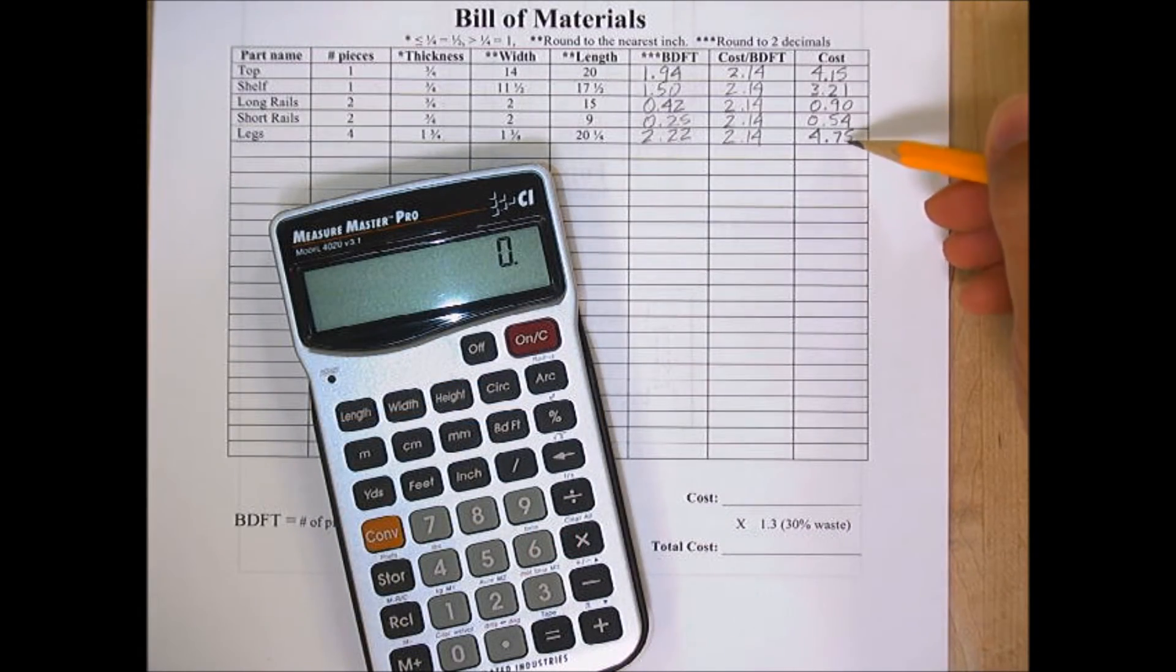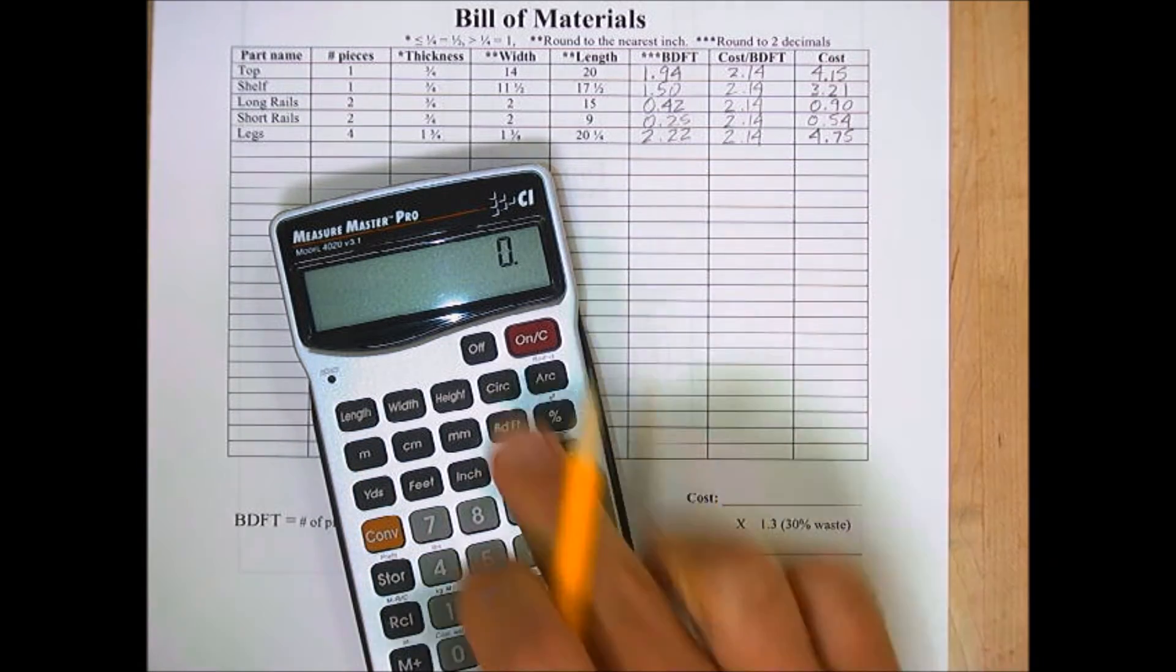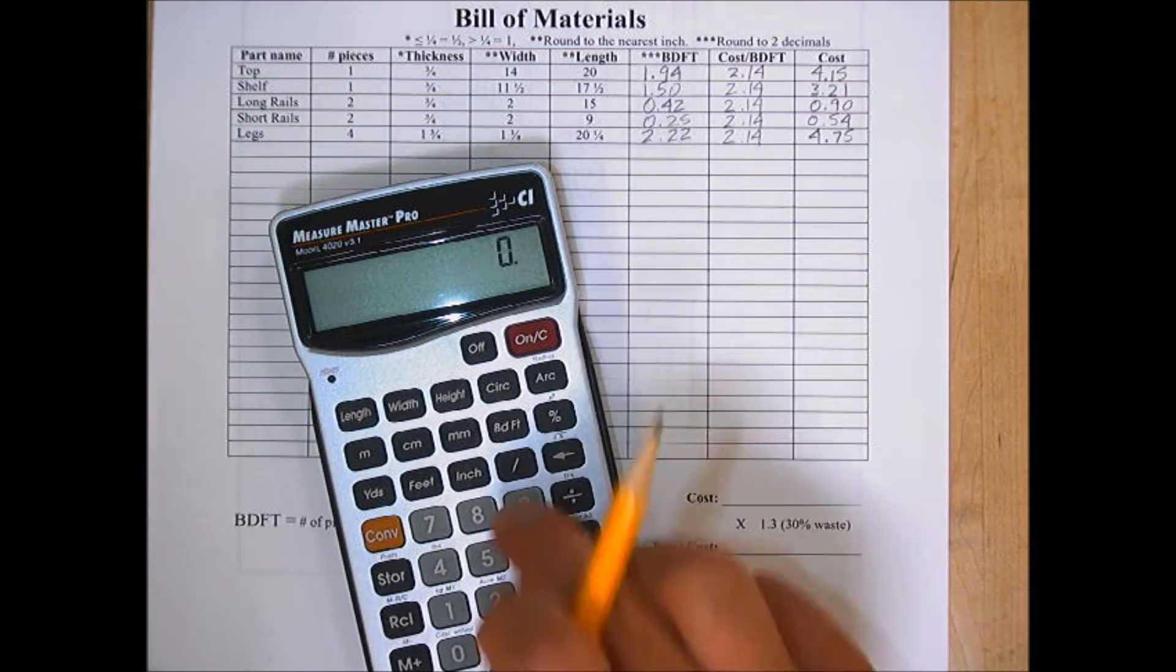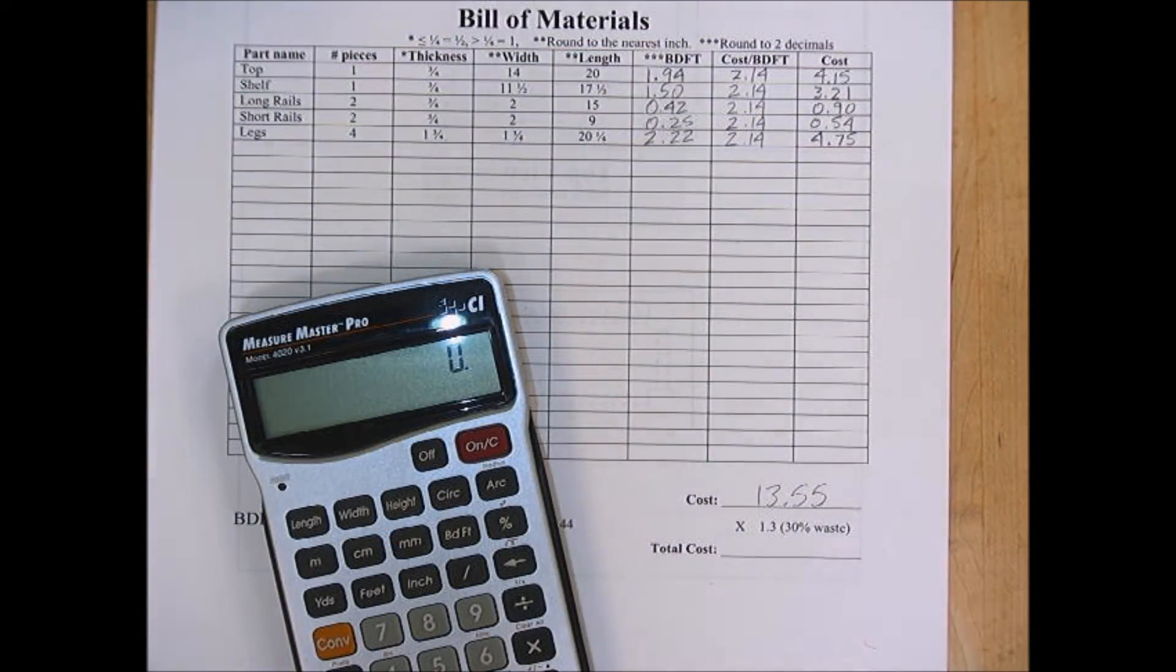Then we add all of our cost per piece together to get a cost at the bottom. Finally we need to multiply by 1.3, which will add in 30 percent waste.